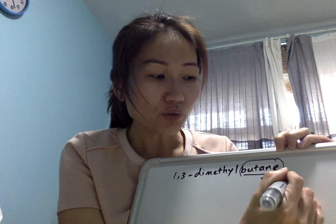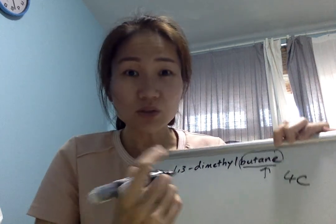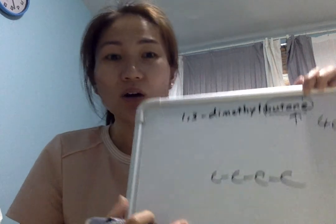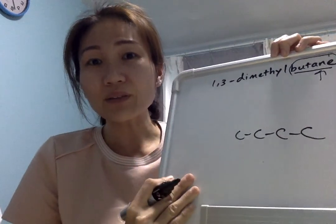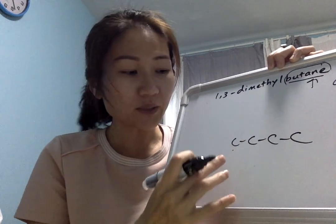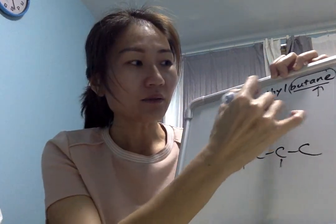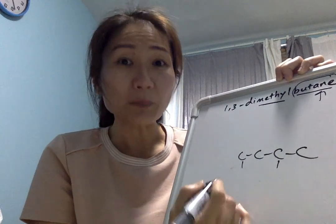So I'm gonna draw four carbon atoms: one, two, three, four. And on the position one and three, on the first and the third position, I should be filling this position with methyl group.